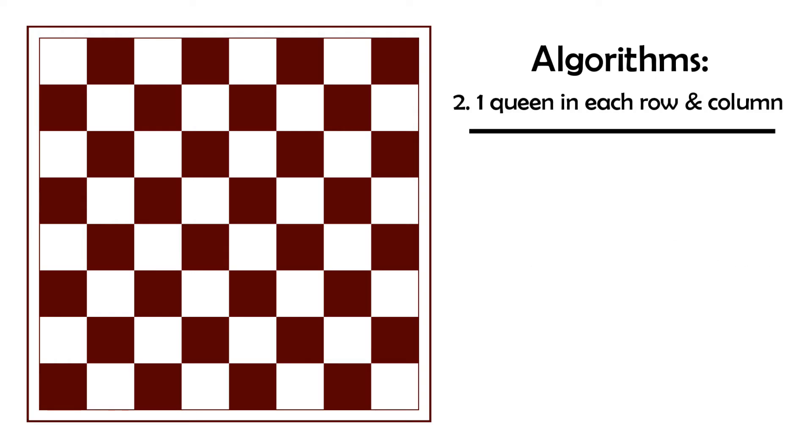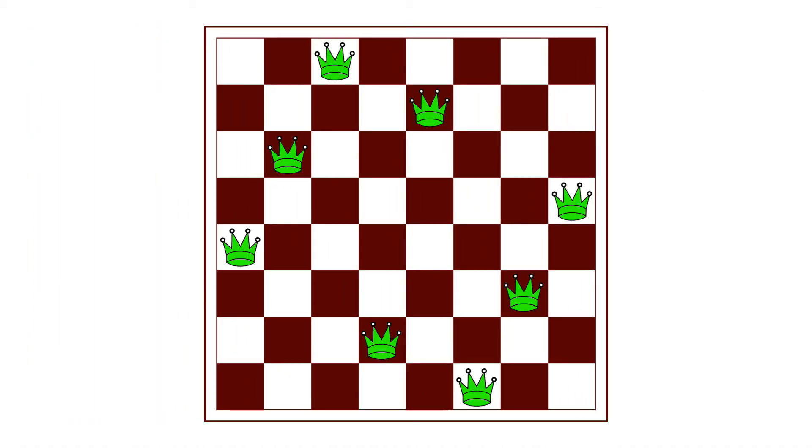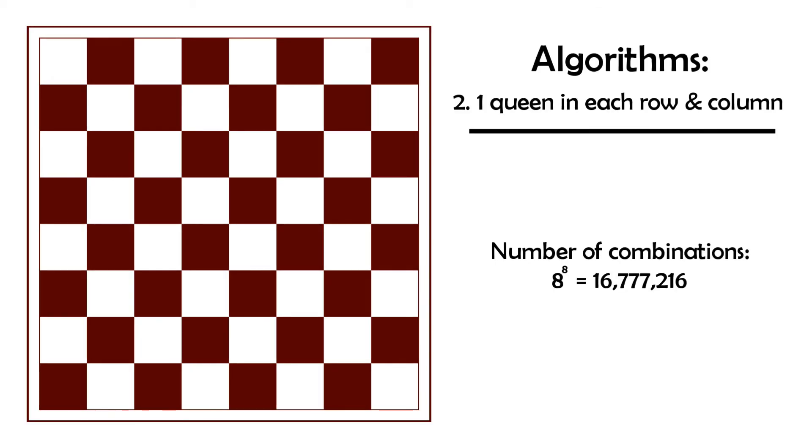The second one is a bit smarter. It applies a very simple rule but it largely reduces the number of combinations. If you look at the solution we found before, you can notice that each row and each column contains only one queen, which makes sense because if there are two queens in a row or column, they would attack each other. But as I said, applying this one simple rule reduces the number of possible combinations to 8 to the power of 8.